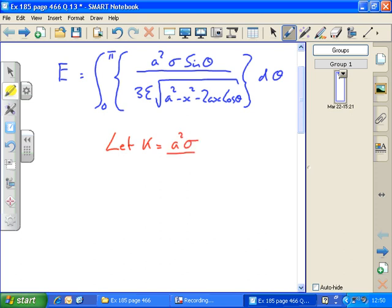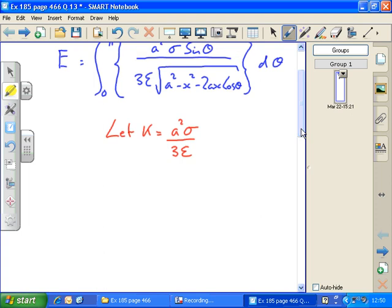I'm going to let k equal a squared sigma over 3 epsilon, so I don't need to keep writing that and that can come outside the integral. And I'm also going to rewrite the inverse square root as to the power of minus a half.